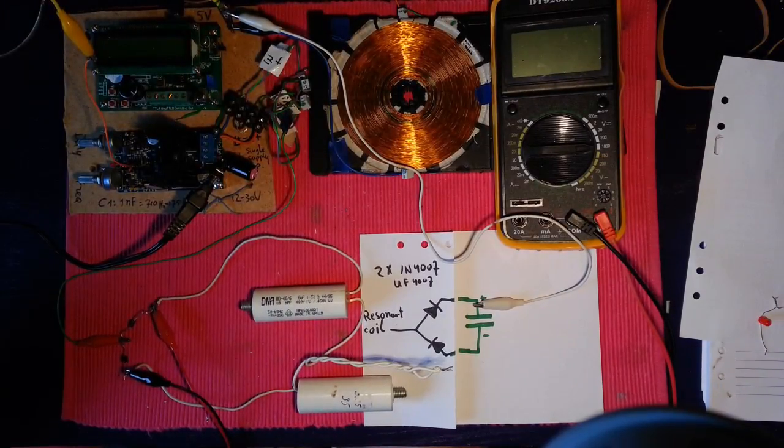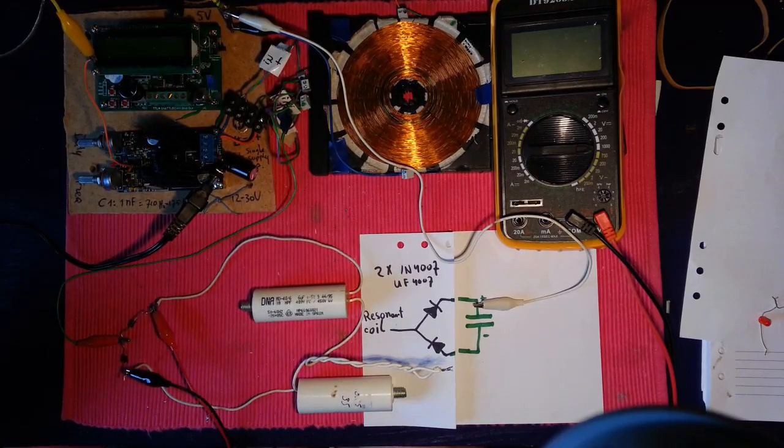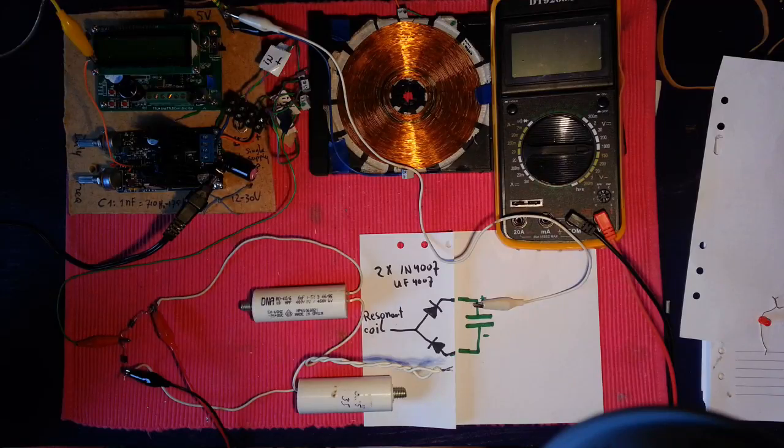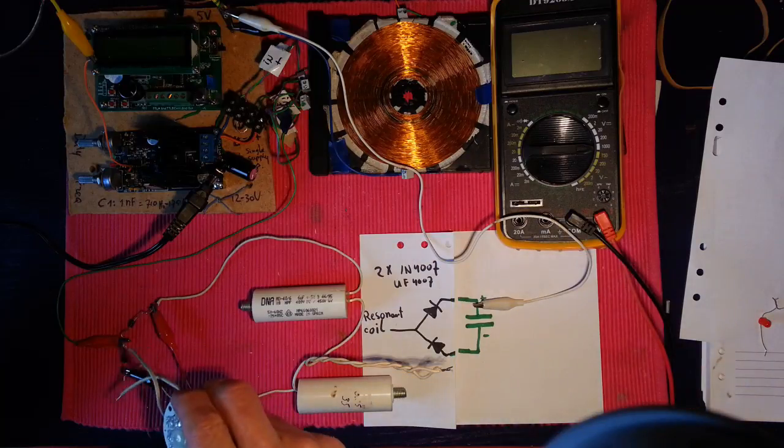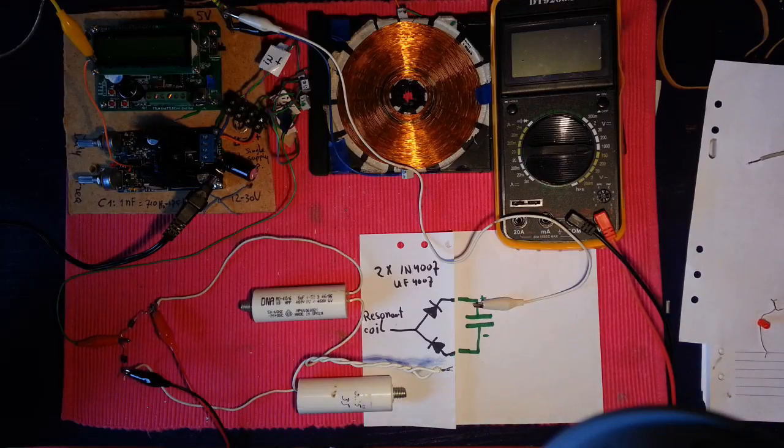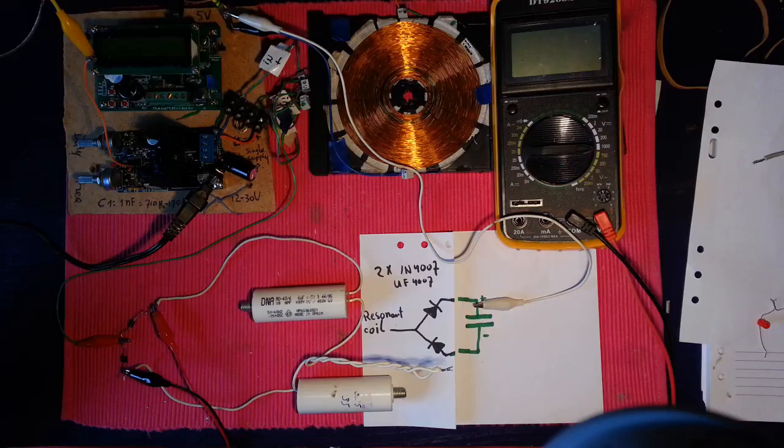This video is an addition to my previous video on the dielectric field of a bifiler coil. Since in that video I showed a LED connected to two diodes hooked up to ground with one capacitor, I now want to make this addition where I take two capacitors and connect them also to ground and see what happens. I also have a slight variation.